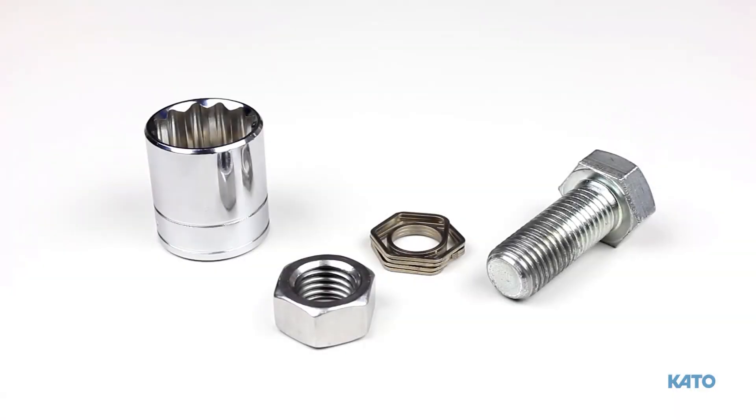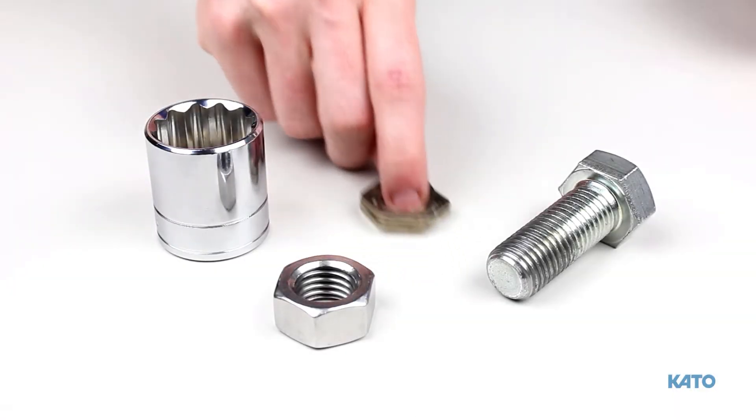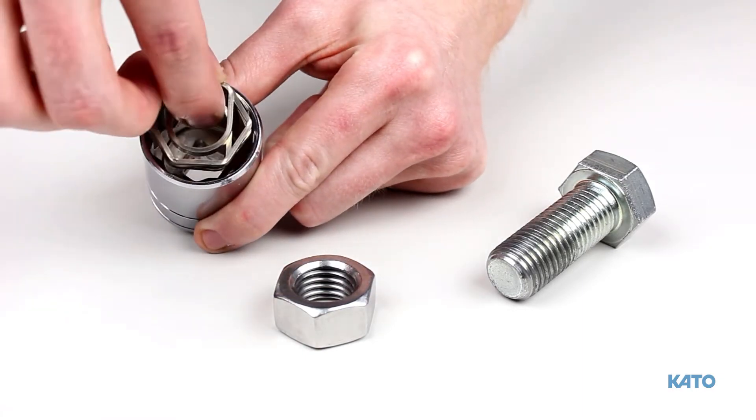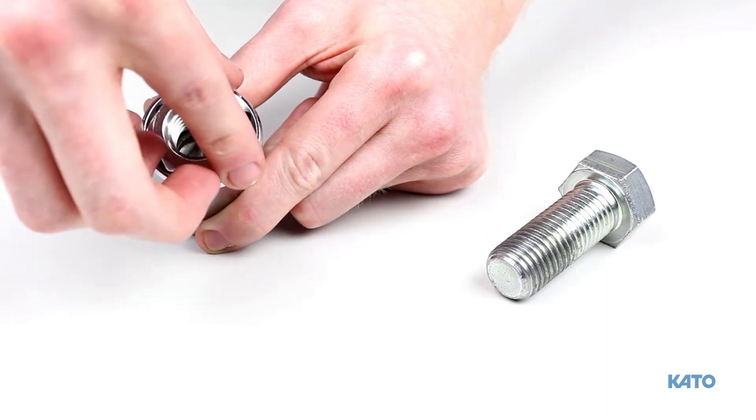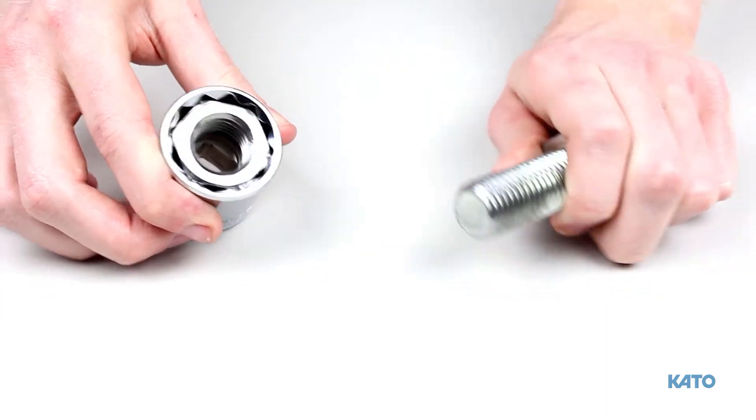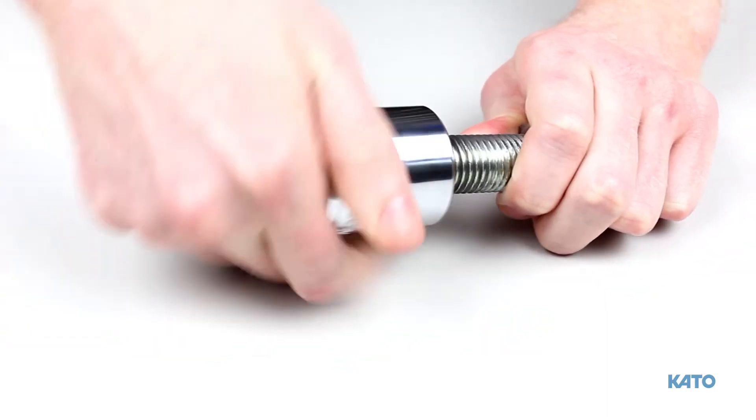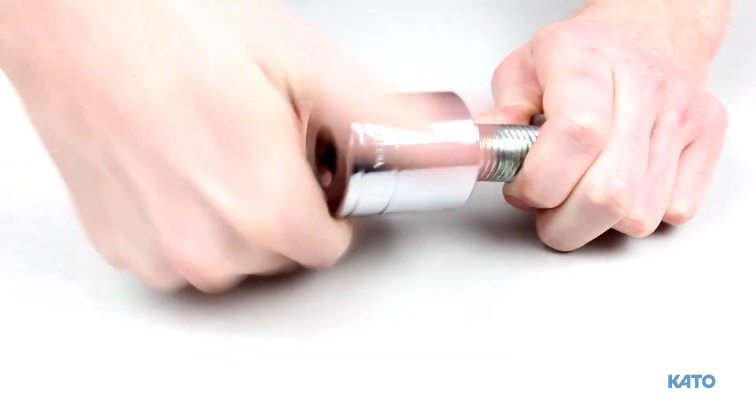For new applications or assemblies, Lock One can be installed at the same time as the nut. Simply insert Lock One and the nut into the 12 point socket. Thread the parts onto the bolt and tighten the assembly to the required torque.